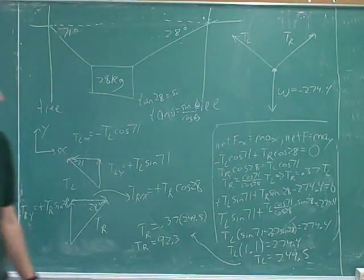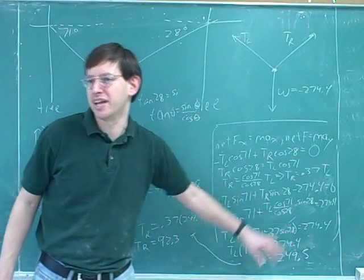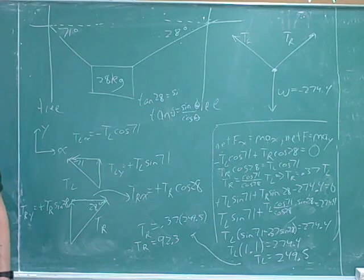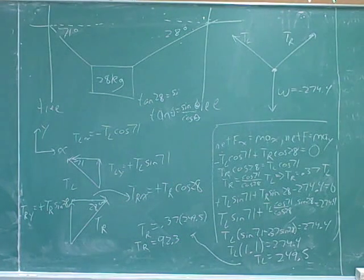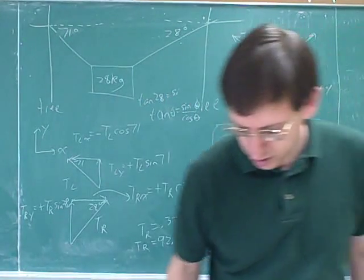But even if you do leave these till the end, you don't have to make this into a tangent. You can just write it as sine 28 over cosine 28. The only advantage is that it kind of reduces how much you're writing a little bit. Right. All right. Thank you.